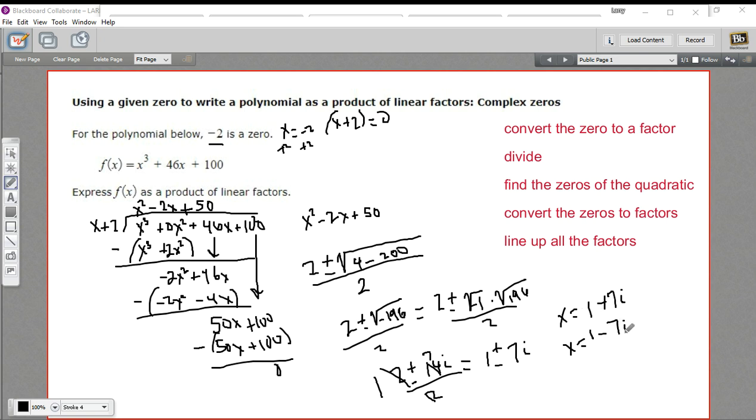And if we want to convert these to factors, we'll just set these equal to zero by subtracting everything. So if I subtract 1 and subtract 7i from the first one, I get x minus 1 minus 7i as a factor. And then I'd get x minus 1 minus a negative 7i. That would be plus 7i as a factor.